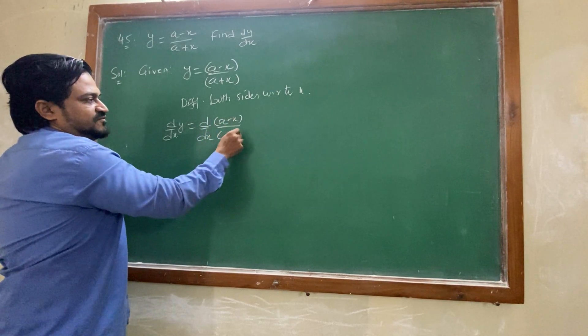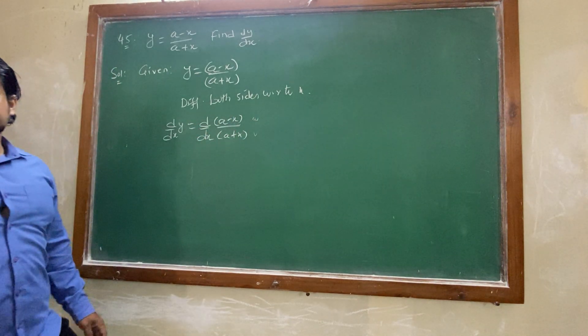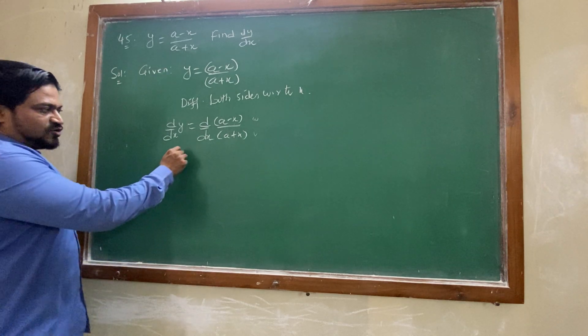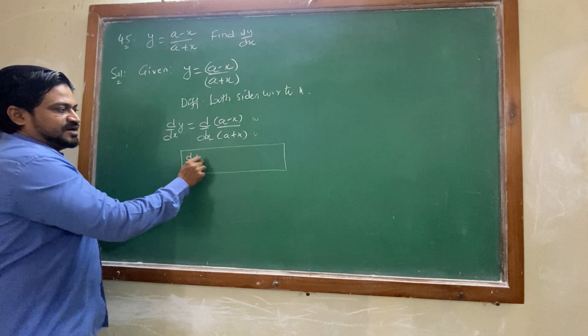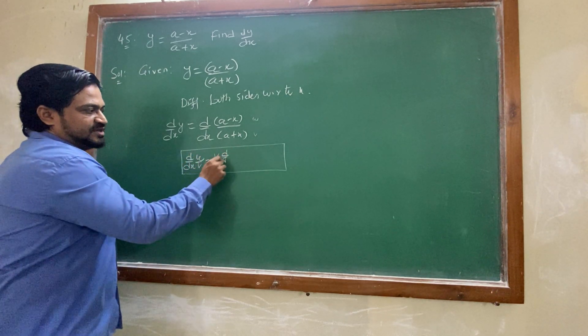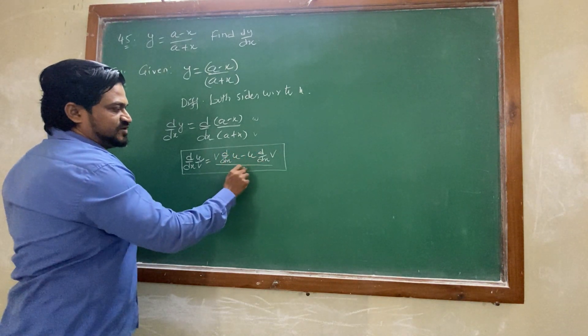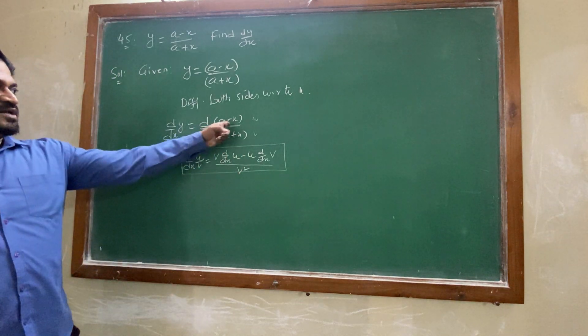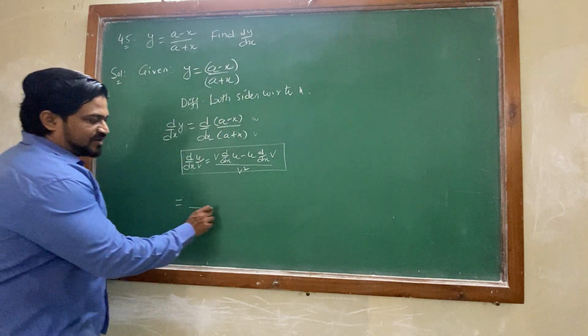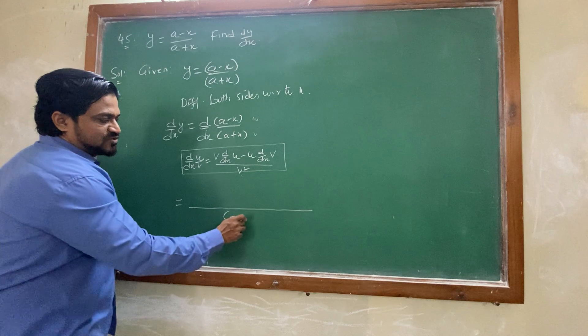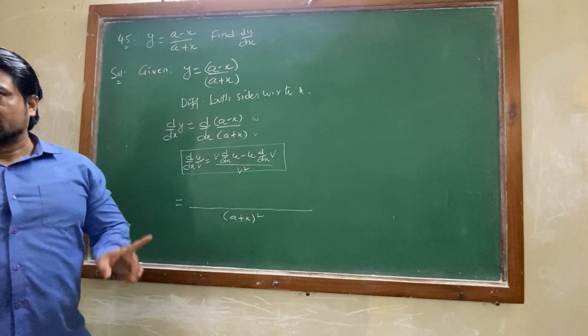Whenever two values are given to us, we will consider first one to be value of u, second one value of v. So for u by v form, you have to consider formula for u by v form in which you have to substitute this value. dy by dx of u by v equals v into dy by dx of u minus u into dy by dx of v, whole divided by v square. Don't ignore brackets, you have to consider brackets all the time.